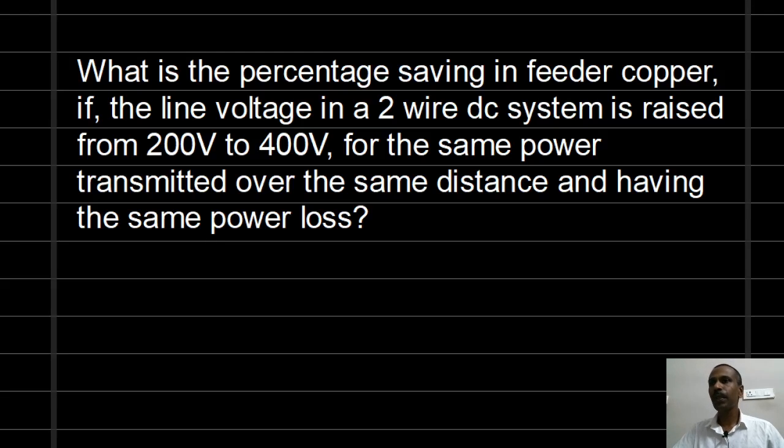Hi students, in this class we are going to solve a numerical problem on the advantages of high transmission voltage. What is the percentage saving in feeder copper if the line voltage in a 2-wire DC system is raised from 200 volt to 400 volt for the same power transmitted over the same distance and having the same power loss?